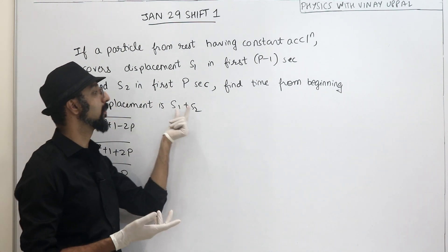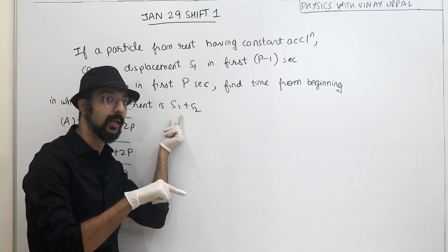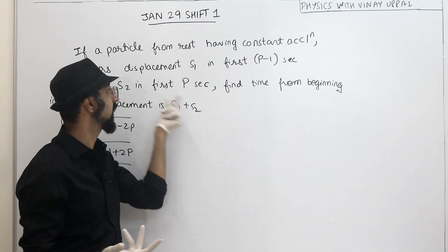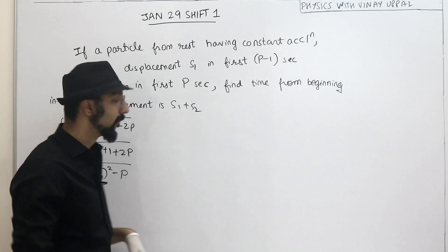So how much time will the displacement s1 plus s2? If s1 value is 0, then total displacement s2 is asking s2. So I know how much will it happen in 1 second. So let's look at the answer.